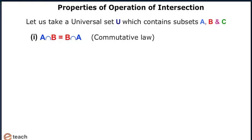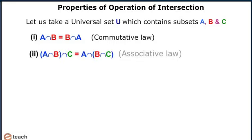The commutative law is A intersection B equals B intersection A. The associative law states that (A intersection B) intersection C equals A intersection (B intersection C).